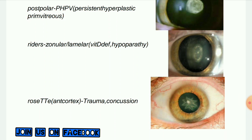Next image: Rosette cataract, also known as stellate-shaped cataract. It is associated with blunt injury of the eye. If the patient has no history of trauma, systemic illness, metabolic disease, or drug use that led to this cataract, rosette cataracts are also associated with diabetes mellitus. This stellate-shaped cataract is seen in diabetic patients as a complication.